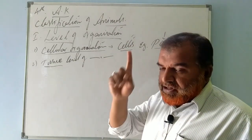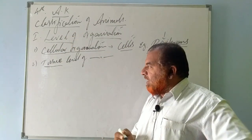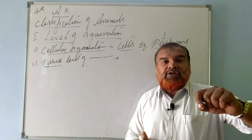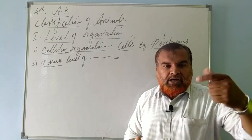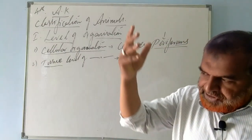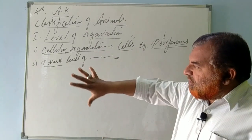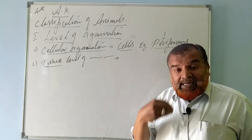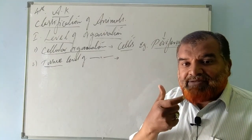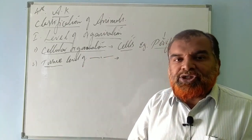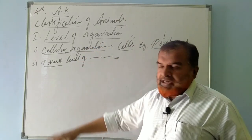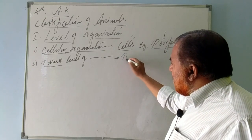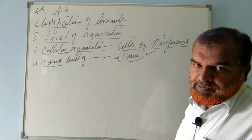Tissue level of organization means the various physiological functions — digestion, respiration, excretion, circulation, reproduction — are performed by different tissues. These physiological functions are studied under human physiology. In our own body, for example, respiration is performed by the nose, nasopharynx, larynx, and lungs. Digestion is performed by the mouth, buccal cavity, salivary glands, esophagus, and stomach.